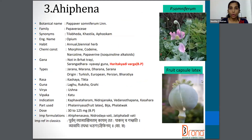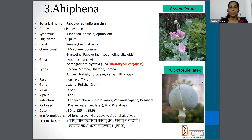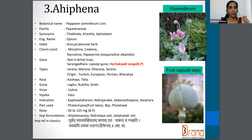The next one is Ahifena. Ahifena is Papaver somnifera, family Papaveraceae. Synonyms are Tilabeda, Afugam, etc. The common name is Opium. The part used is Phala Niryasa, that means fruit latex, and also Bija and Phala Twak are used. The dosage is 30 to 125 milligram as per Bhavaprakasha.